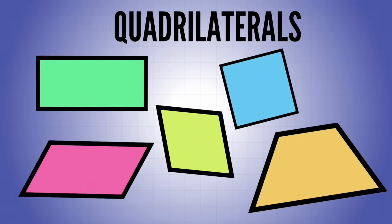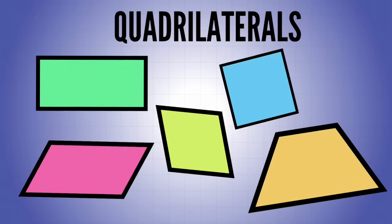Now we're going to talk about quadrilaterals. If we look at the first four letters of quadrilateral, 'quad' means four and 'lateral' means lines, so you're talking about a two-dimensional shape that has four lines. What is also important is that all the interior angles in each one of these shapes add up to 360 degrees inside a quadrilateral — that doesn't change.